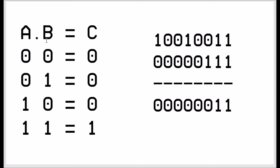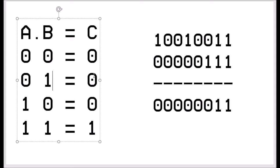In this truth table we have two inputs, A and B, and it's going to output C. If the first input is 0 and the second is 0, since the rule is both must be 1, the result is 0. If it's 0 and 1, the result is still 0. Same if it's 1 and 0 — still 0. The only case where you get a 1 out is when it's 1 and 1. You've got to remember that all inputs have to be 1 to make an output of 1.